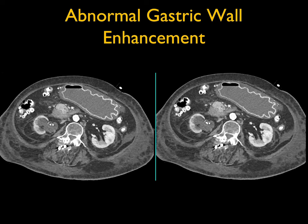Case number two — what are we looking at? Really prominent gastric wall enhancement. It looks like you drew this with a pencil or a pen. It's really thin and markedly enhancing. That means hyperemia. Typically when you see this, we're thinking about gastritis.